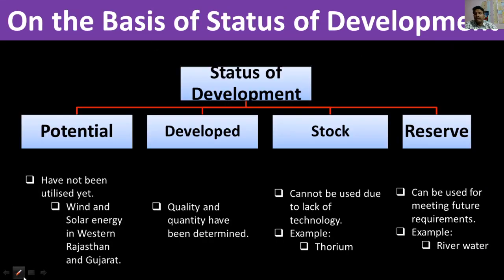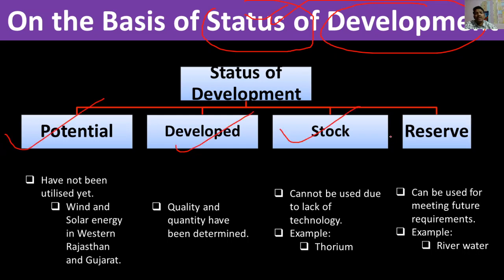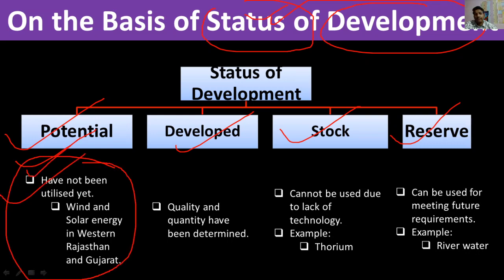The types of resources on the basis of development status are: potential, developed, stock, and reserve. Potential resources are those which have not been fully utilized yet. For example, wind energy and solar energy in western Rajasthan and Gujarat have great potential — there is a lot of possibility to exploit them there.